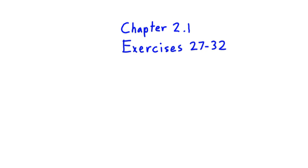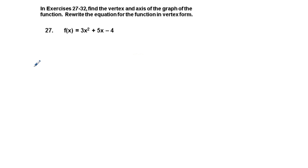This is chapter 2.1, exercises 27 through 32. This section of our book, section 2.1, has to do with the beginning of polynomial functions — linear and quadratic functions. In exercises 27 through 32, find the vertex and axis of the graph of the function, and rewrite the equation for the function in vertex form.